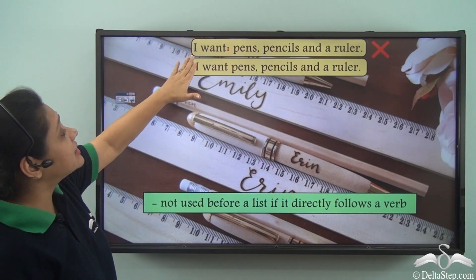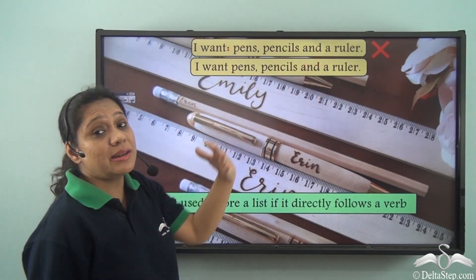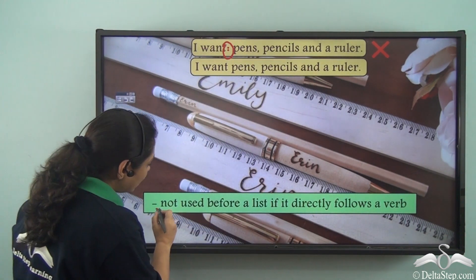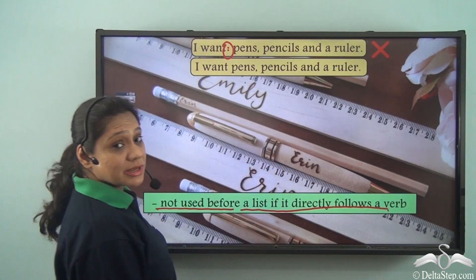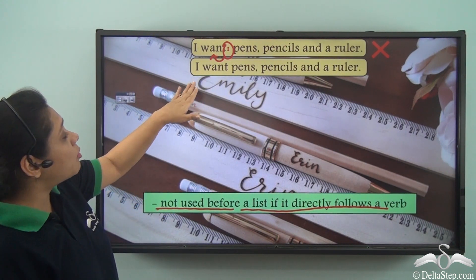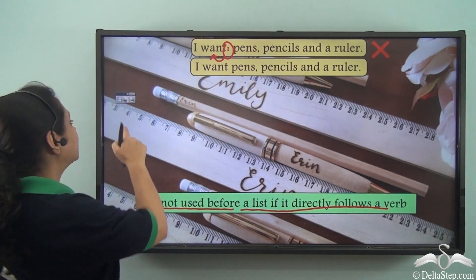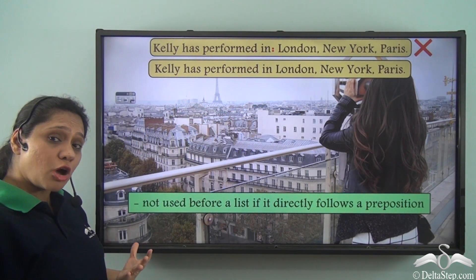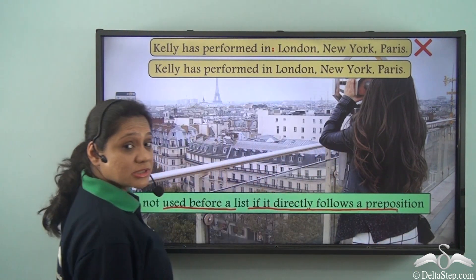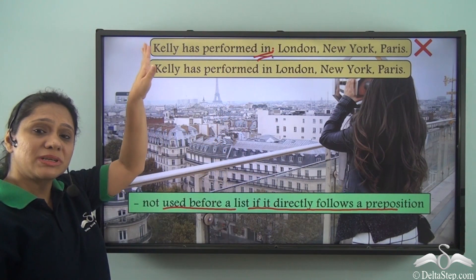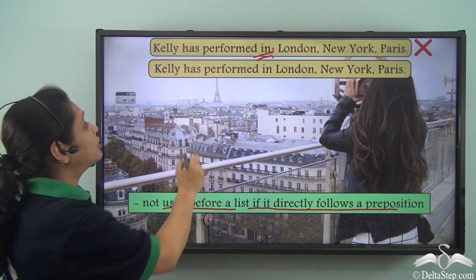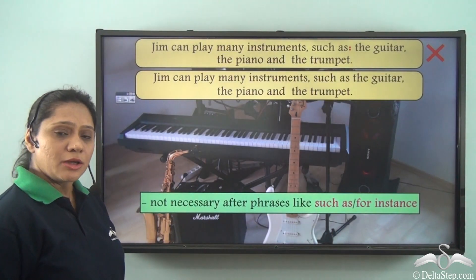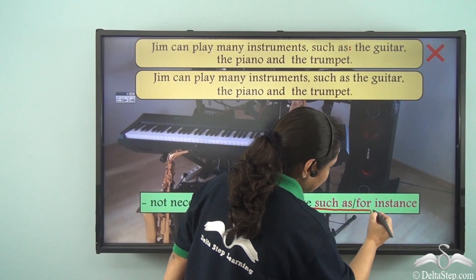If we write 'I want pens, pencils and a ruler,' we never use a colon to introduce the list. A colon is not used before a list if it directly follows a verb. Similarly, we do not use a colon before a list if it directly follows a preposition — for example, 'Kelly has performed in London, New York, Paris' does not take a colon after 'in.' We also do not use a colon after phrases like 'such as' or 'for instance.'